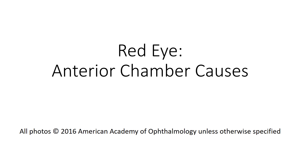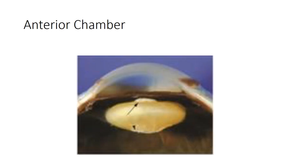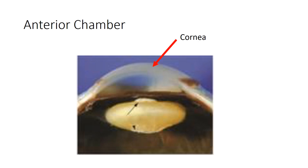In this short video we will review how anterior chamber problems can lead to a red eye. The anterior chamber of the eye is literally a chamber at the front of the eye containing aqueous humor. It is bounded by the cornea anteriorly and the iris and lens posteriorly.